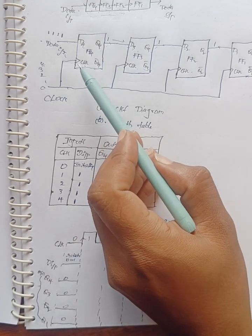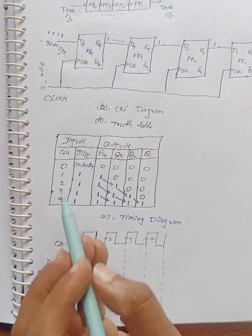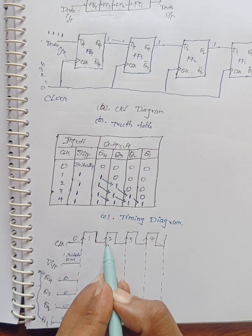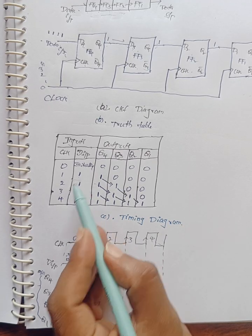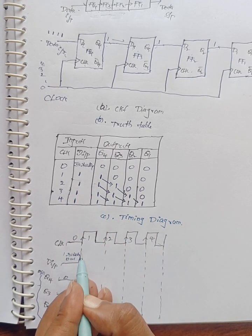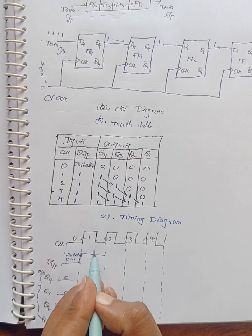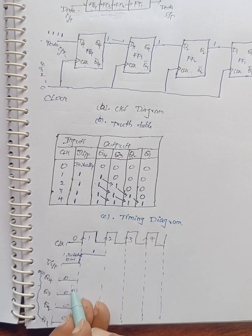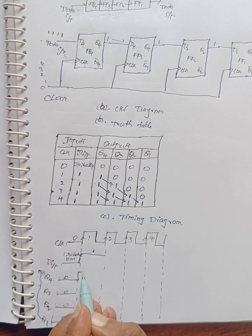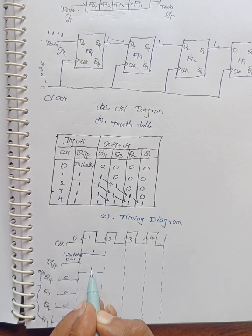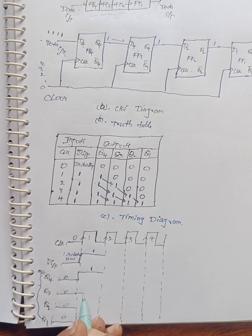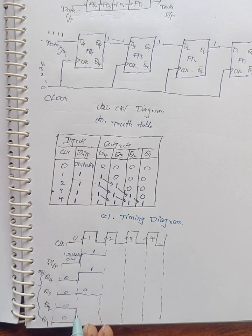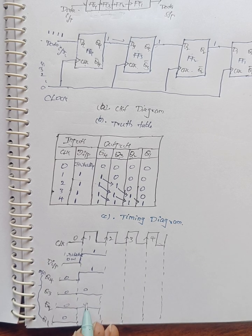Positive edge triggering is used — the circuit responds on the rising edge of the clock. Whenever input data is one and the first clock pulse arrives at its positive edge, Q4 value becomes one, shown as a square pulse. The remaining outputs Q3, Q2, Q1 remain zero.